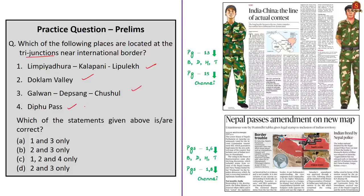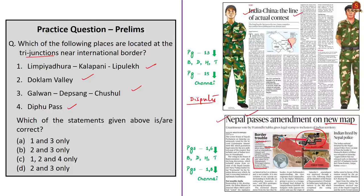This question helps you revise ongoing border disputes of India with its neighboring countries. One news article says Nepal's parliament unanimously approved a new map which shows places such as Limpia Dhura, Kalapani, and Lipulekh — these three places are strategically important and part of Pithoragarh district of Uttarakhand. Another news article reports on the Line of Actual Control as the 'line of actual contest' due to the ongoing territorial dispute between India and China, exposing military adventurism by the People's Liberation Army of China. Key locations to focus on include Galwan Valley, Pangong Tso, Daulat Beg Oldi, and Chushul.